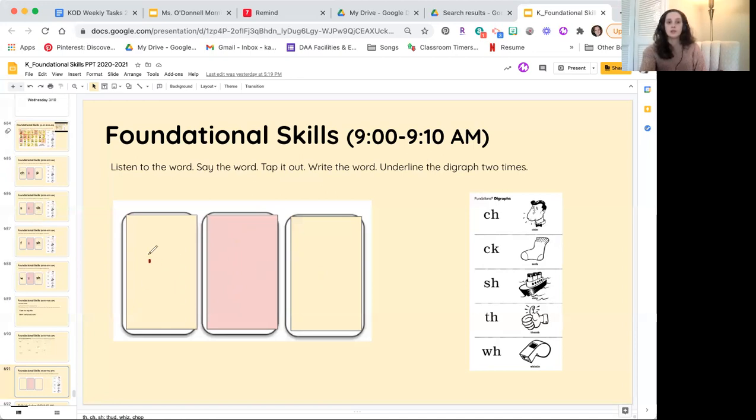Alright, first I heard a ch. Ch I know is C-H. Ch, ah. What other sounds do you hear? Ch, ah, p. Chop. C-H-O-P. Double underline the C-H.